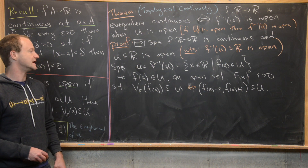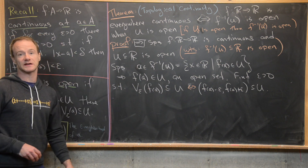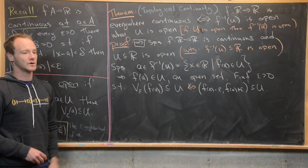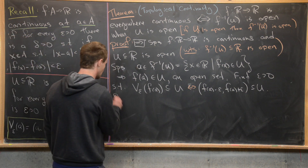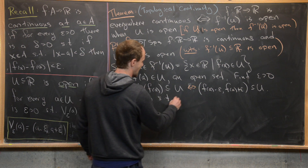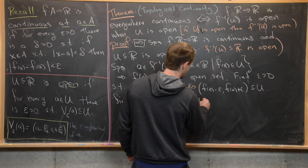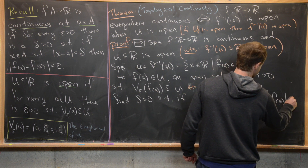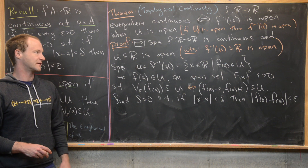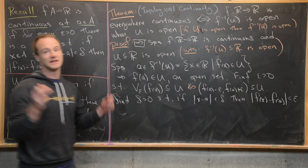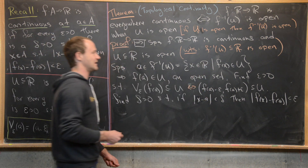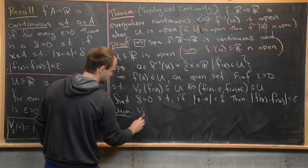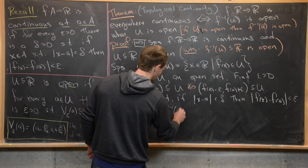Next we use the continuity of f. We find a delta corresponding to this epsilon — this epsilon came into existence by the openness of U, and now this delta will correspond to that epsilon. So let's find a delta greater than zero such that if the absolute value of x minus a is less than delta, then the absolute value of f(x) minus f(a) is less than epsilon. I claim this delta is the special delta that will prove the openness of f inverse of U, specifically that the delta neighborhood centered at a is totally contained in f inverse of U.